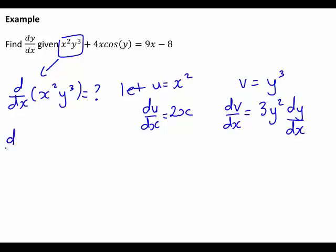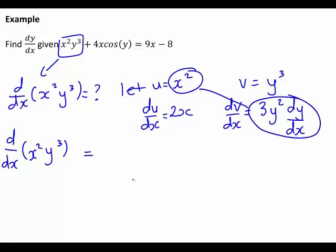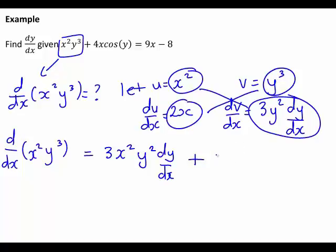The derivative of x squared y cubed with respect to x is then u times dv/dx plus v times du/dx. Multiplying and tidying up, u times dv/dx gives 3x squared y squared dy/dx, and v times du/dx gives plus 2xy cubed. We'll use this result when we put the full expression together.